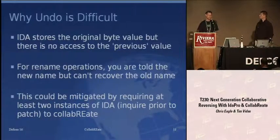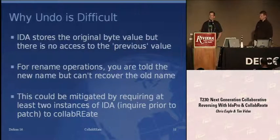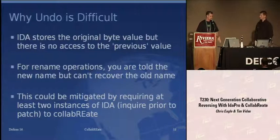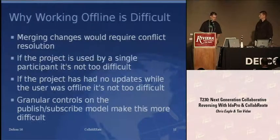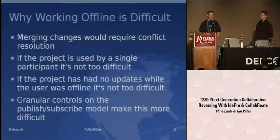I talked a little bit about why undo is difficult. Basically, we're just not getting enough information pushed out of the database that's generating the change event in order to be able to roll back to its previous state.